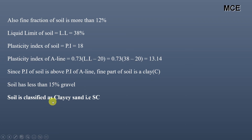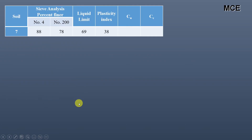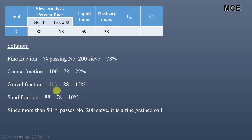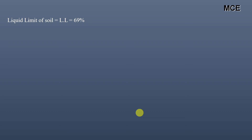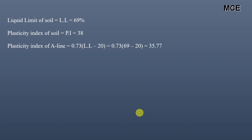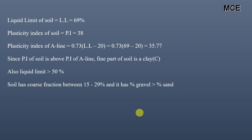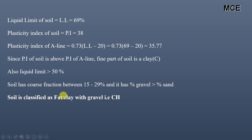For soil 7, fine fraction is 78%, coarse fraction is 22%, gravel fraction is 12%, sand fraction is 10%. More than 50% passes sieve 200, so it is a fine-grained soil. Liquid limit is 69%, PI is 38%, A-line PI is 35.77. PI is above the A-line so fine part is clay. Liquid limit is greater than 50%. Coarse fraction is 15–29% with gravel percentage greater than sand, so gravel is included in the group name: Fat Clay with Gravel, group symbol CH.